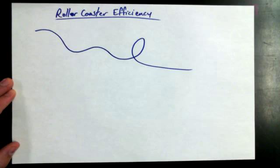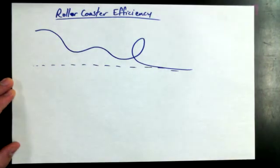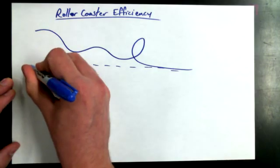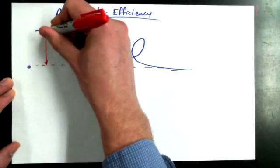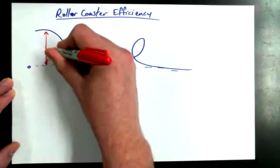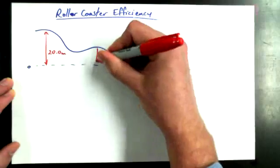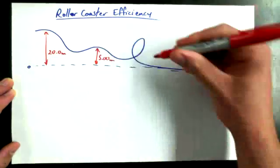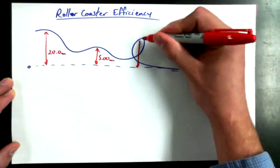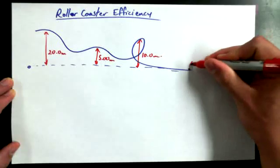All right, so there's a little loop in this roller coaster. And we're going to have a baseline, just as always. I'm going to keep some of our old values: 20 meters up, 5 meters up, 10 meters up, and 0 meters.